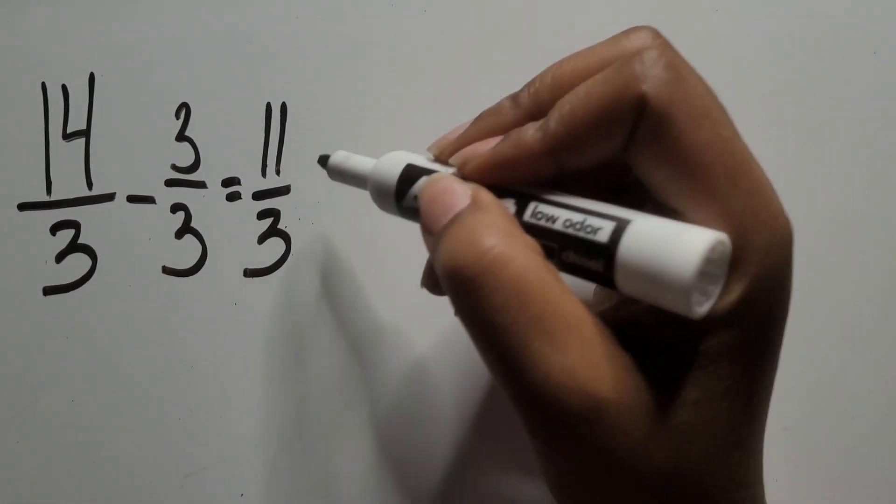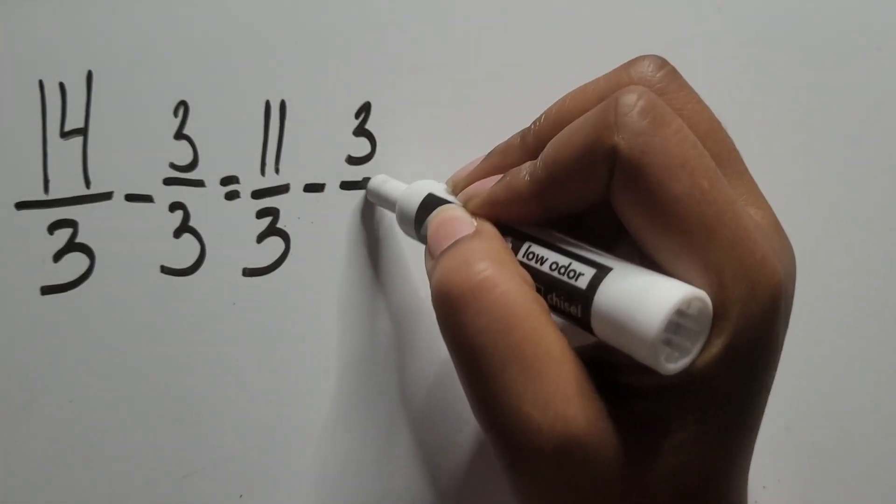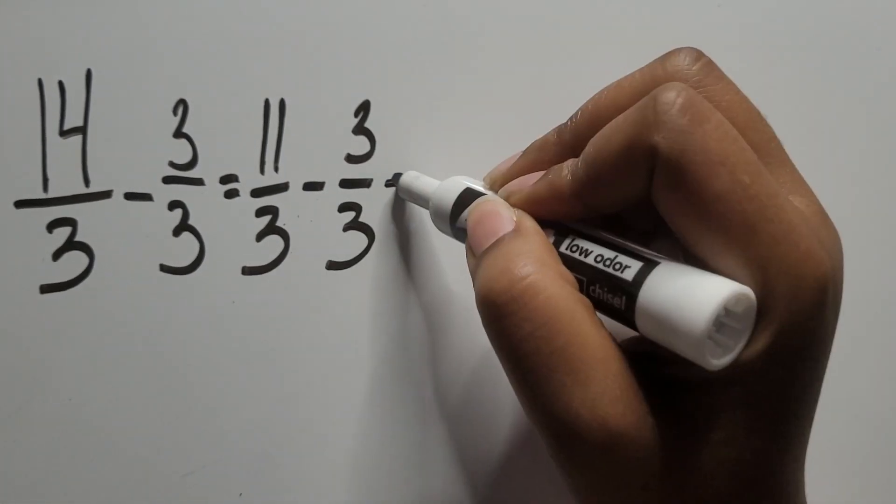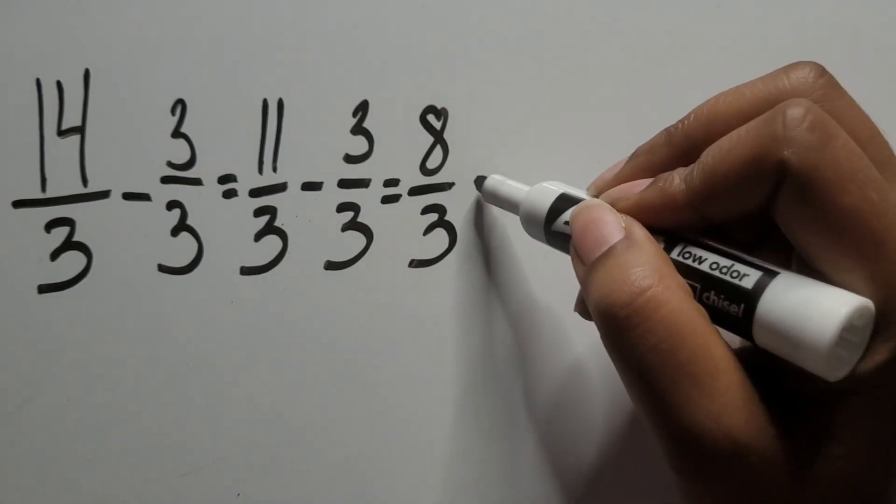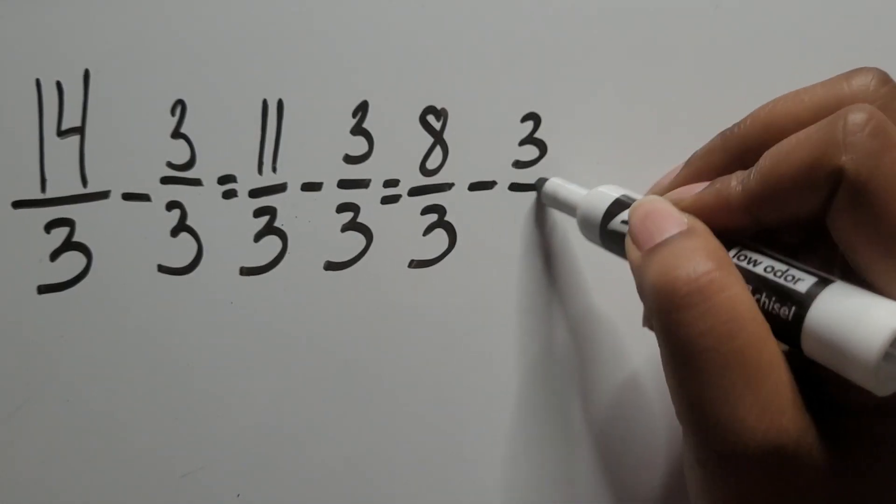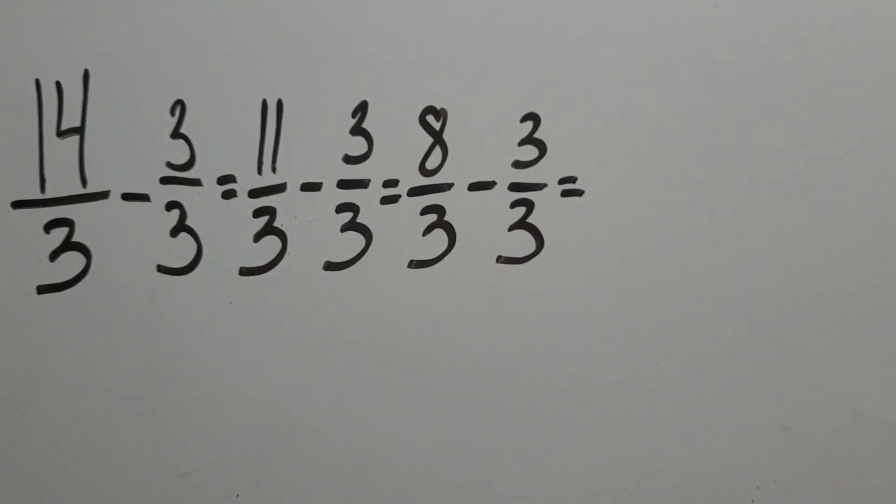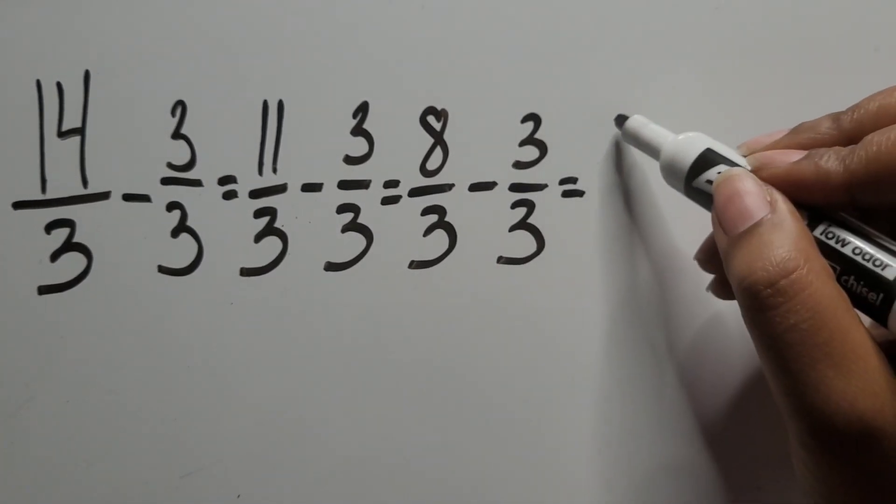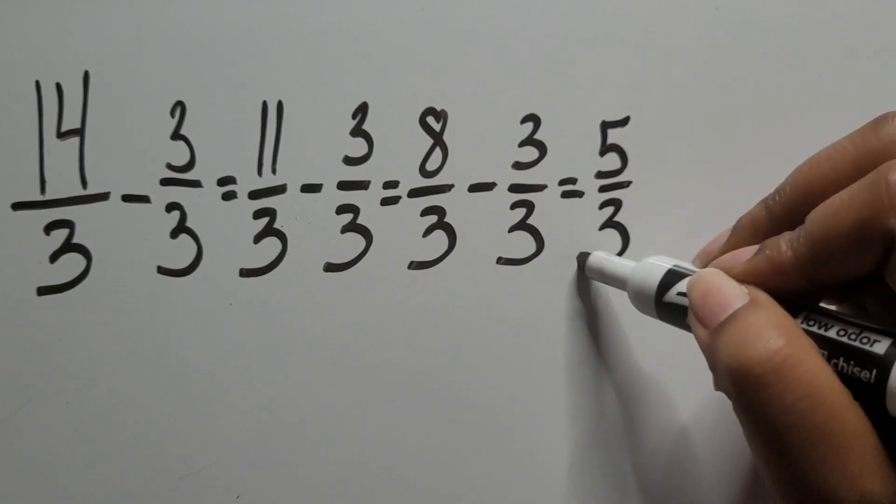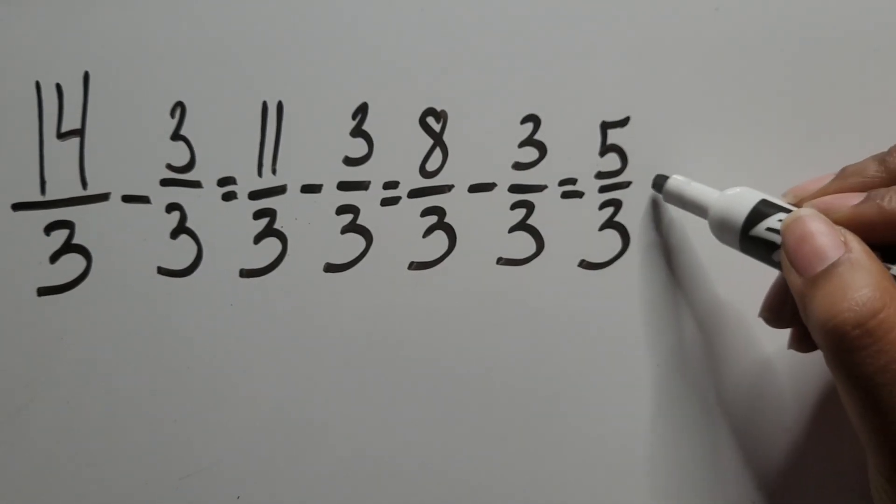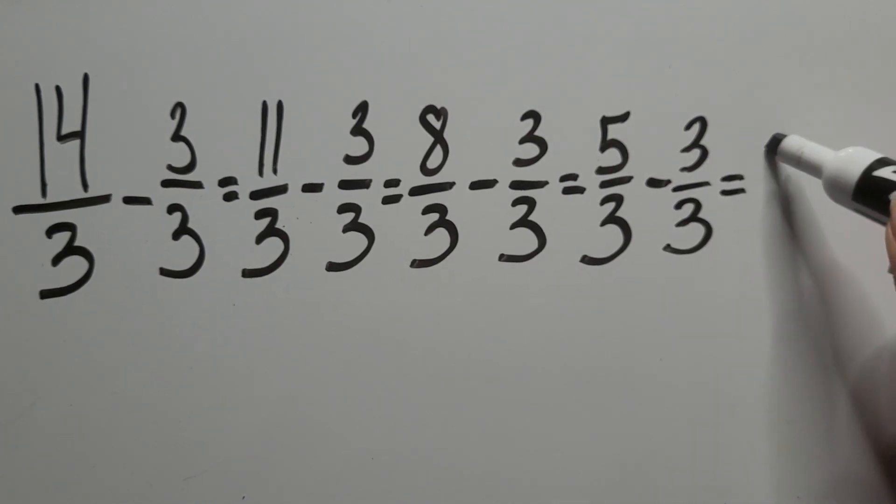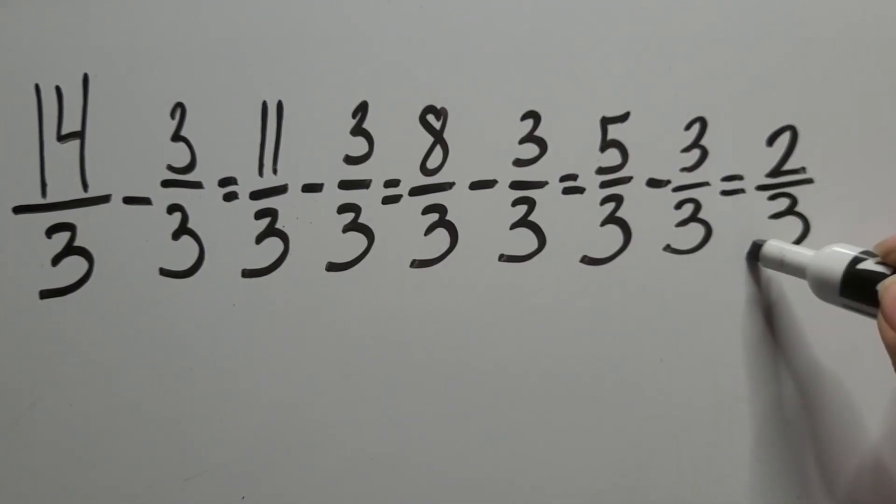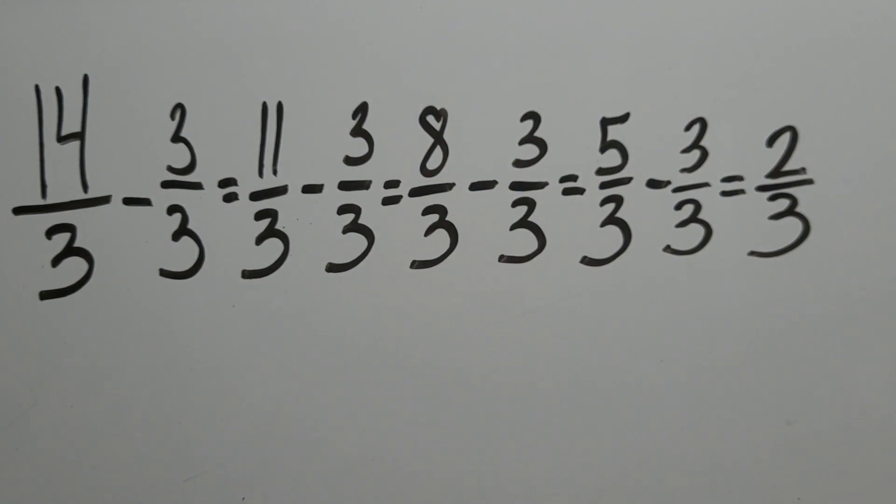14 thirds minus three thirds is 11 thirds. 11 thirds minus three thirds is eight thirds. We can continue doing this until we no longer can subtract three thirds. Remember, that is how much is equivalent to one whole in this example. With two thirds being left over, it's not enough to subtract another three thirds, so we'll stop here.